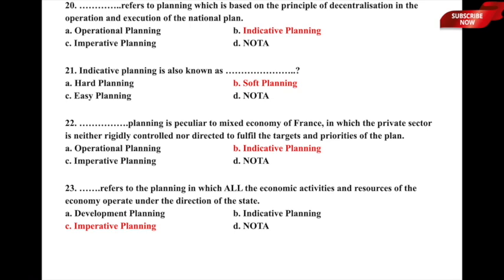Question 21: Indicative planning is also known as what? The options are a) hard planning, b) soft planning, c) easy planning, or d) none of the above. The correct answer is option b) soft planning, which uses the principle of decentralization in operation and execution of the national plan.